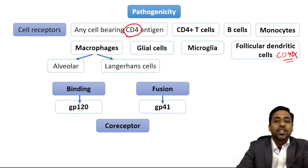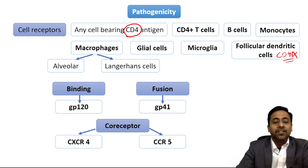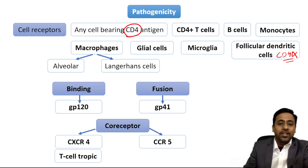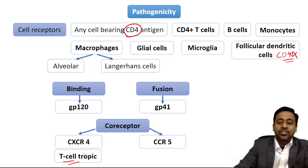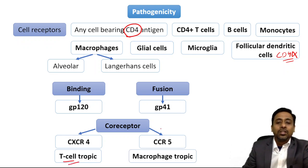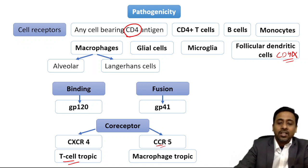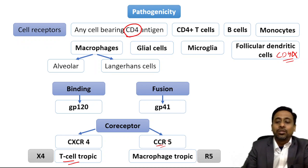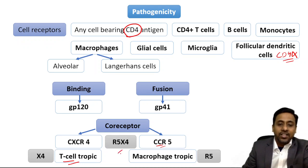Co-receptors required for binding are CXCR4 and CCR5. HIV strains using CXCR4 are called T-cell tropic strains, also known as X4. Those using CCR5 are macrophage-tropic strains, also known as R5. Strains that are both T-cell tropic and macrophage tropic are known as R5X4 strains.